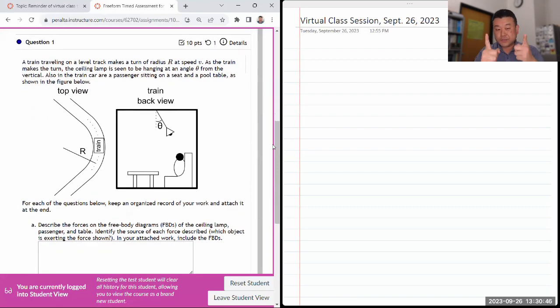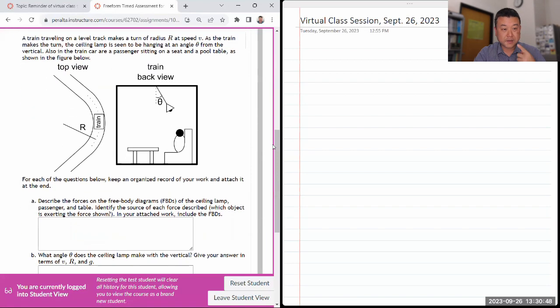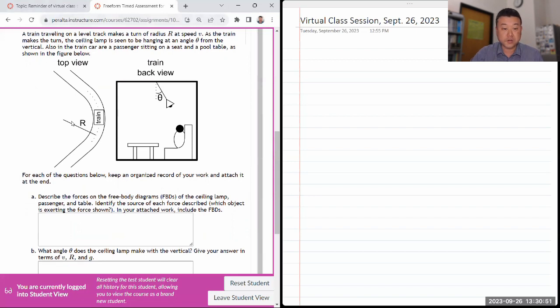This will involve circular motion. It says a train traveling on a level track makes this turn of radius R. As the train makes the turn, a ceiling lamp is seen at angle theta. Also in the train are passengers sitting in seats and a pool table as shown in the figure below. You have more than one object, but these are all independent of each other. I think that's how I justified it.